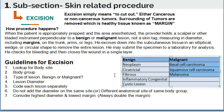The physician will excise down into the subcutaneous tissue in an elliptical, wedge, or circular shape to remove the entire lesion. The main purpose is to remove the entire tumor, whether cancerous or non-cancerous. Finally, he will submit the specimen to the laboratory for analysis, check for bleeding, and close the wound in a single layer.